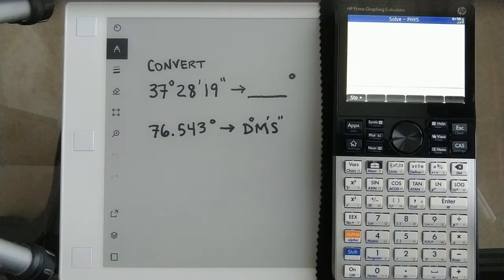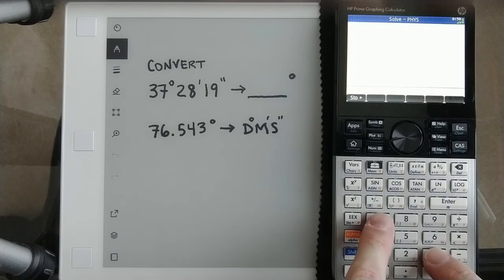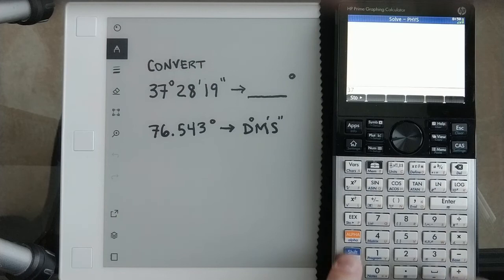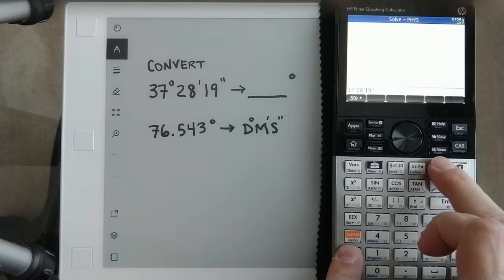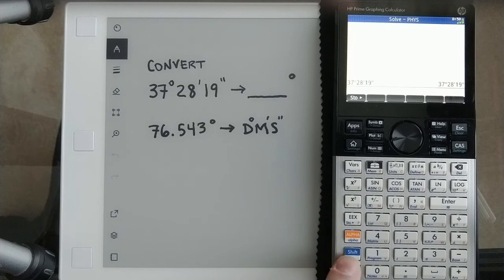Okay, on the Prime here I'm going to do the same conversion. This is more like what you'd see on a Casio, TI, or Sharp. So you do 37 and then there's a degrees, minutes, seconds symbol here, so I'm just doing shift, typing that: 37 degrees, 28 minutes, and 19 seconds. I don't have to go into any special menu or anything, just type that in, hit enter. Doesn't look like anything happened because it didn't, but when I do shift and type that symbol again it converts it.